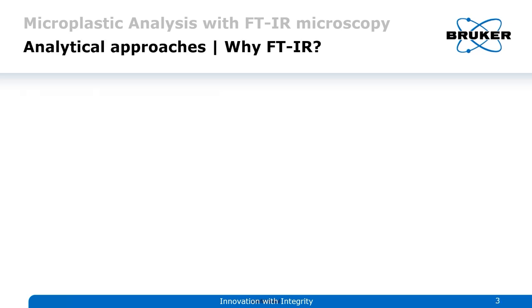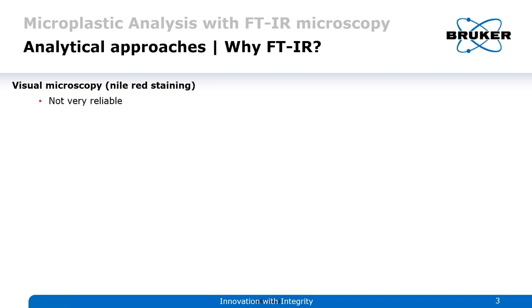There are many different analytical approaches. One of them, for example, is visual microscopy in combination with Nile-Red staining — an agent that colors all plastic particles but not other particles. But this is not very reliable as you're doing this with the naked eye. It's very tiring, very time-consuming, and you have no polymer identification, so you don't know what kind of polymer you actually found.